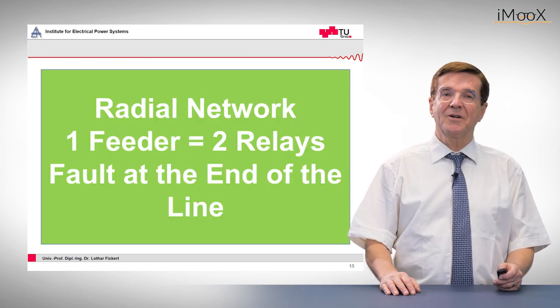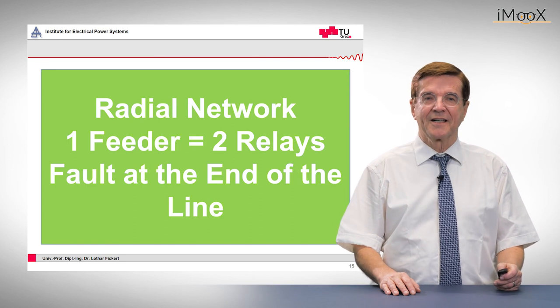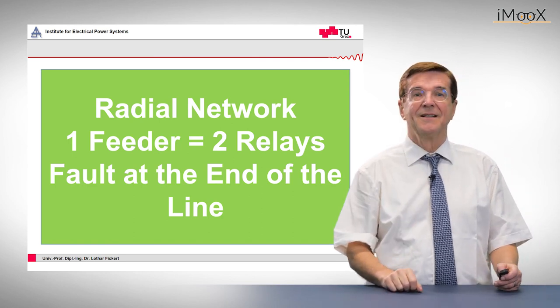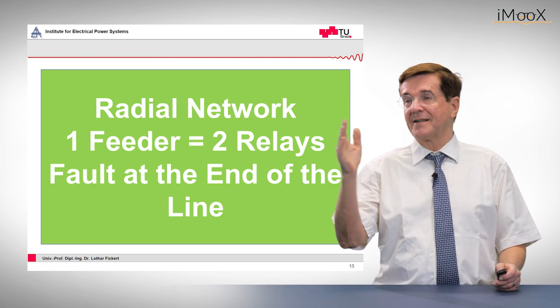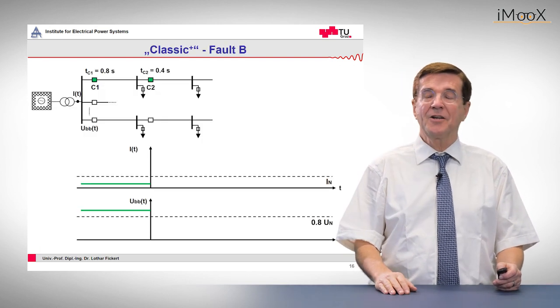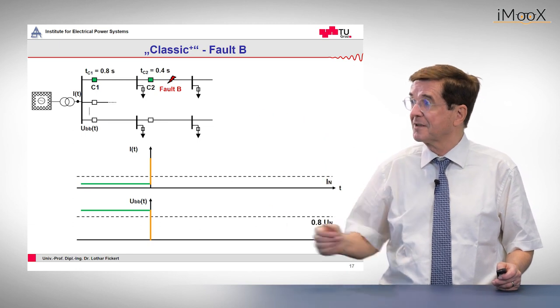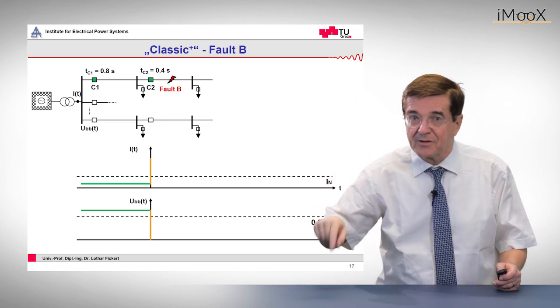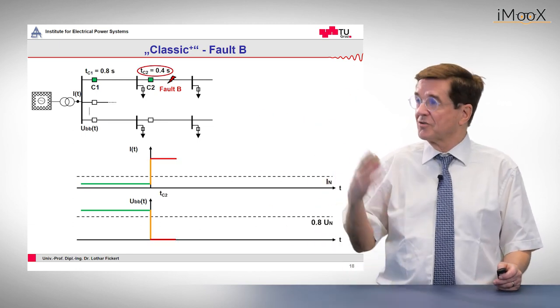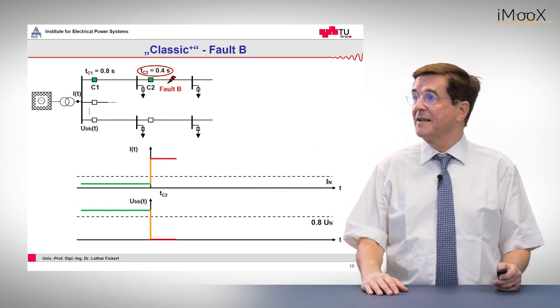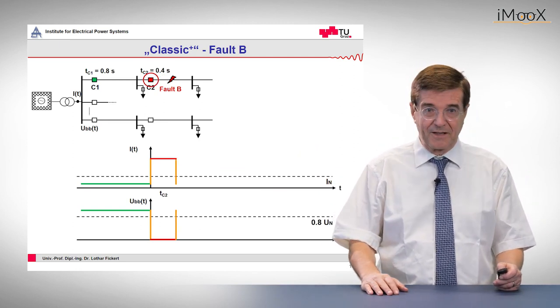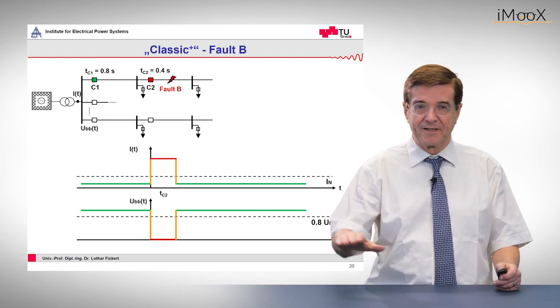Now if we want to have a more sophisticated approach, we take one feeder but two relays: one at the beginning of the line, the other one at the end of the line. And we look again at the fault at the end of the line. The fault occurs, the current goes up, the voltage goes down, and this goes on for 0.4 seconds again. After this, the fault is cleared, the circuit breaker opens, and the system resets.